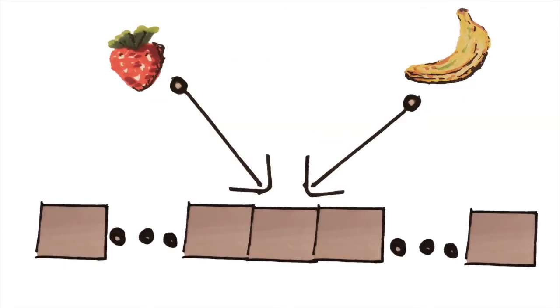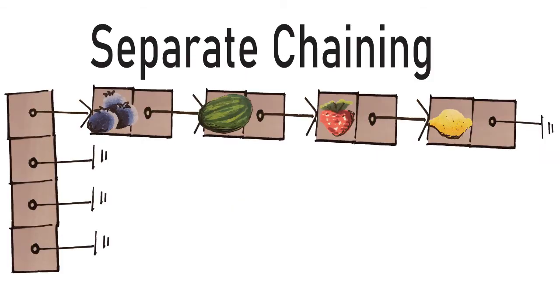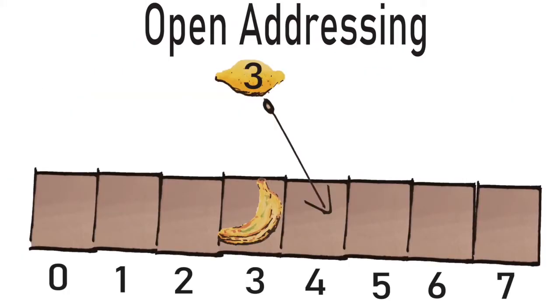At this point you might wonder, but how do we make sure 2 fruit never end up at the same index? We don't! We just suck it up and deal with collisions. There are two main ways to handle collisions: keeping a linked list at each index, separate chaining, or looking for another open spot in the array, open addressing.